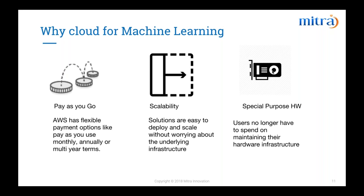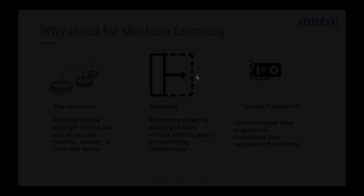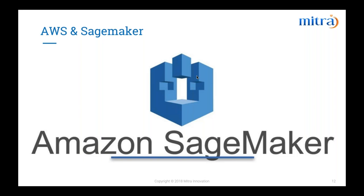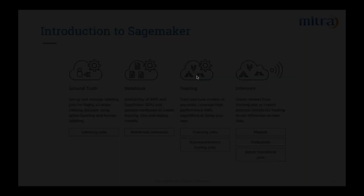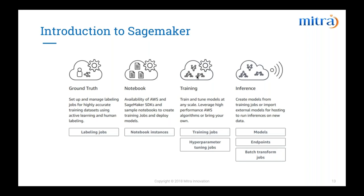I invite Ayesha Manta-Pereira, our research engineer, to talk about what SageMaker is and what features it offers. Thank you. I'm Ayesha Manta-Pereira, currently working as a Research Engineer in the Meetra Innovation R&D Division. Amazon SageMaker is a fully managed machine learning service. With Amazon SageMaker, data scientists and developers can quickly and easily build their machine learning models and directly deploy them into production-ready hosted environments. It also provides integrated Jupyter Notebooks with easy access to your data sources for exploration and analysis, and you don't have to worry about managing servers.